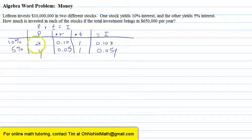For the first equation, we're going to look at the principal, the amount of money that's invested in each of the two stocks. We're going to look at the first sentence of this problem. It tells us that LeBron puts in a total of $10,000,000 in the two stocks. So the amount that he puts into the 10% stock, X, plus the amount that he puts into the 5% stock, Y, equals $10,000,000. So that's our first equation: X plus Y equals $10,000,000.